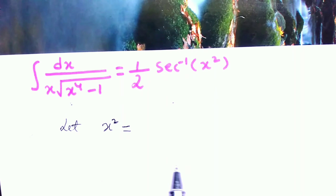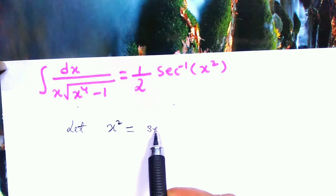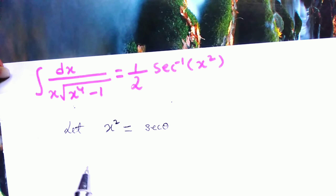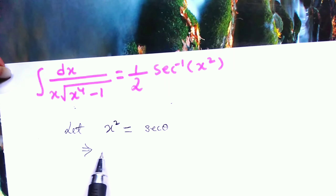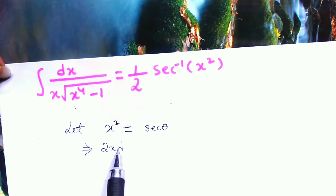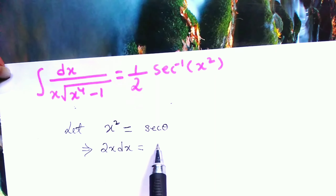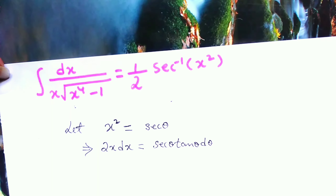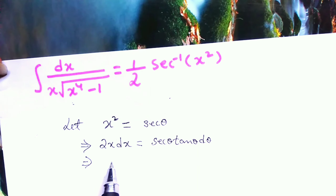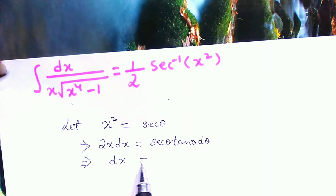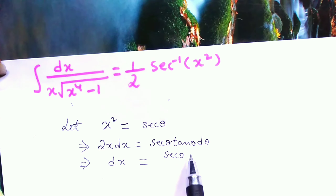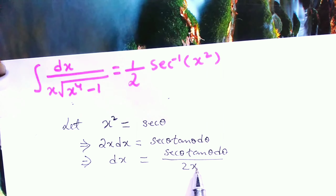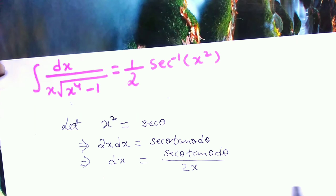If we choose x squared to be sec θ, then we can get rid of the square root. So, to differentiate this with respect to x, we have 2x dx equal to sec θ tan θ dθ, which implies dx is equal to sec θ tan θ dθ divided by 2x.